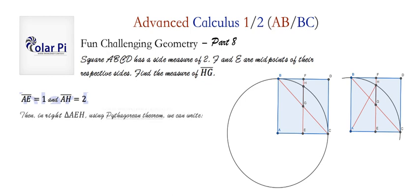And so then, in the triangle that I said is right, which is AEH, we can use Pythagorean theorem to write this: 1² + HE² = 2², that is AE² + HE² = AH².